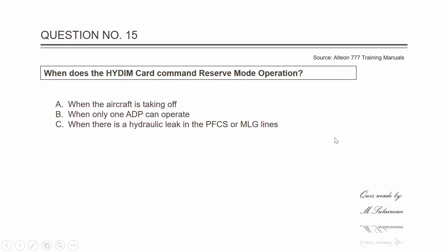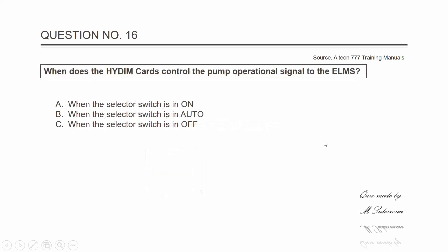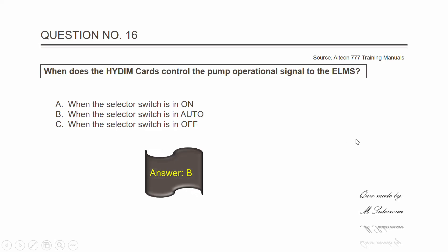Question fifteen: when does the HIDEM card command reserve mode operation? The answer is B — when only one ADP can operate. Question sixteen: when do the HIDEM cards control the pump operational signal to the ELMS? The answer is B — when the selector switch is in auto.